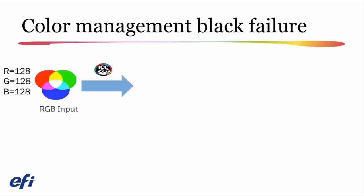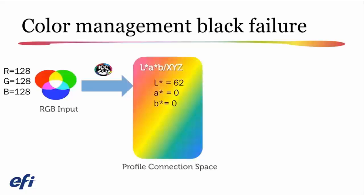They appear gray because the RGB channels are all equal. For example, a mid-tone RGB looks gray to the eye, but it's actually composed of red, green, and blue each at the 128 level. If I color manage RGB 128, 128, 128 through a source profile like sRGB or Adobe RGB, I look up the appearance values in the profile connection space for that mid-tone RGB — maybe something like 62 in the L* channel, 0 in A, and 0 in B, since we have a perfectly neutral color.